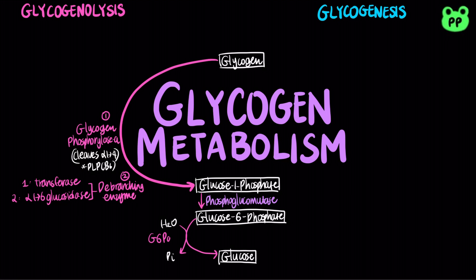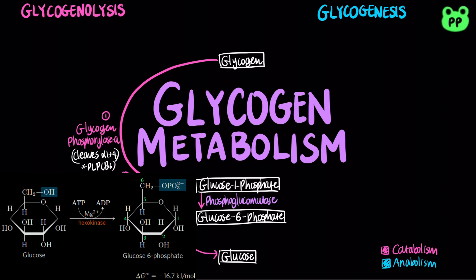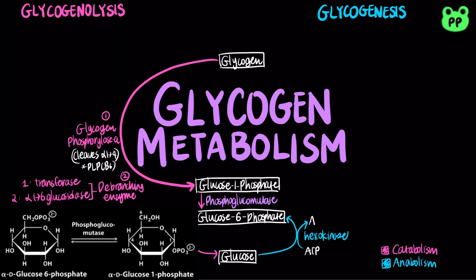Glycogenesis takes place in most tissues, but is most prominent in the liver and skeletal muscles. First, glucose is converted to glucose-6-phosphate by hexokinase during glycolysis. Next, glucose-6-phosphate is converted to glucose-1-phosphate by phosphoglucomutase.